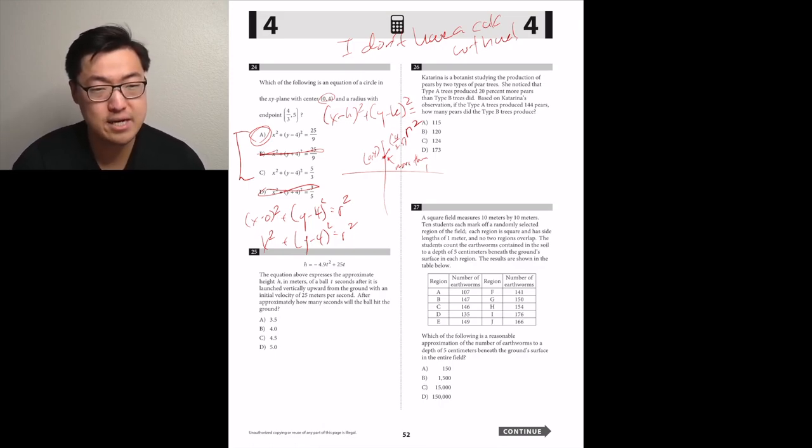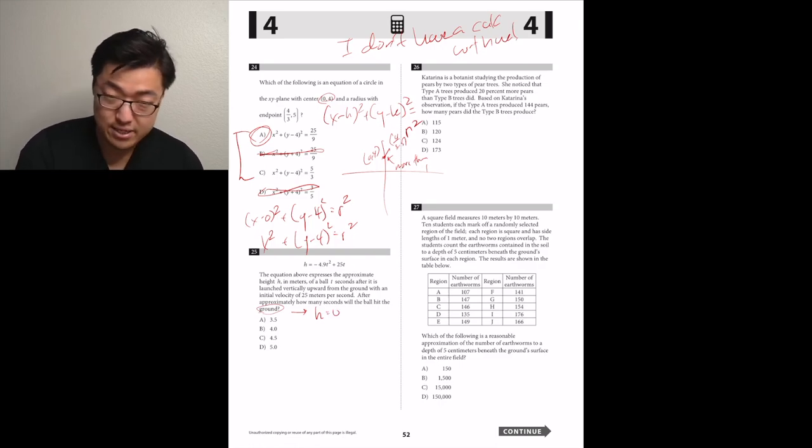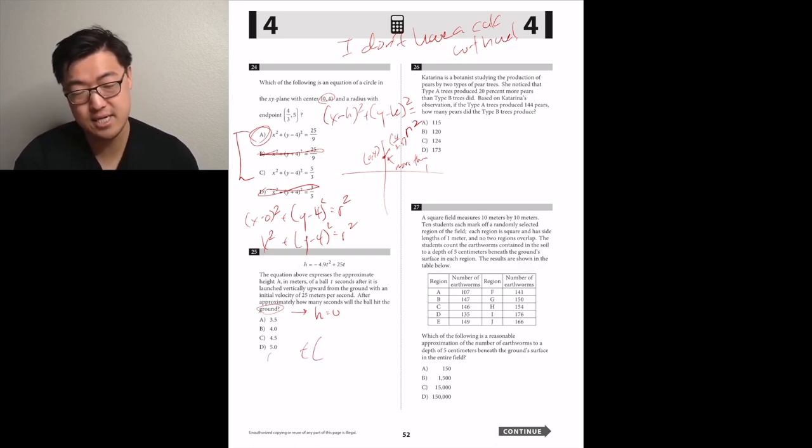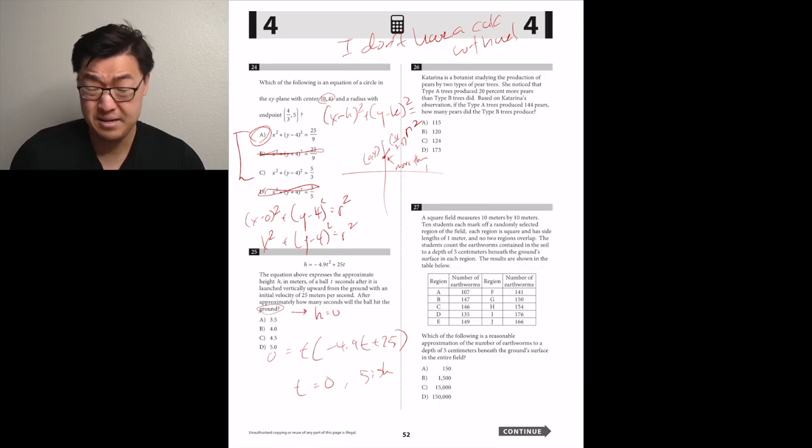Number 25, the equation above expresses the approximate height H in meters of a ball T seconds after it's launched vertically upwards from the ground with an initial velocity of 25 meters per second. After approximately how many seconds will the ball hit the ground? Hit the ground means height is zero. So H is zero. If we do that, then we can factor out a T on the right hand side. You'll get T parentheses negative 4.9T plus 25. So T can be zero or negative 4.9T plus 25 has to equal zero. That'll give you like negative 4.9T is equal to negative 25. So negative 25 divided by negative 4.9. I'm going to say roughly five. So D hopefully.